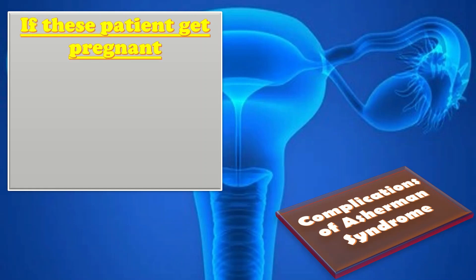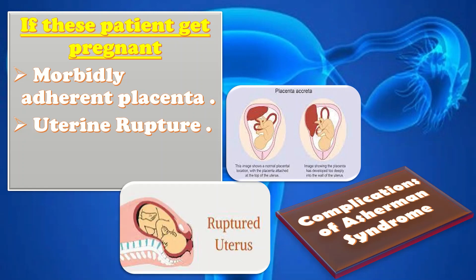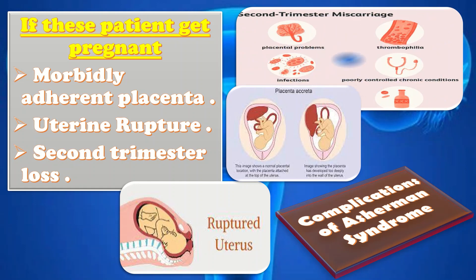If patients with Asherman syndrome do get pregnant, they are at risk of: first, morbidly adherent placenta like placenta accreta; secondly, increased risk of uterine rupture; and thirdly, second trimester miscarriages due to cervical insufficiency or premature delivery. It is good practice to have a detailed discussion with the patient about all these complications. That was all about Asherman syndrome.